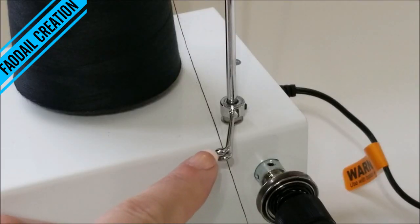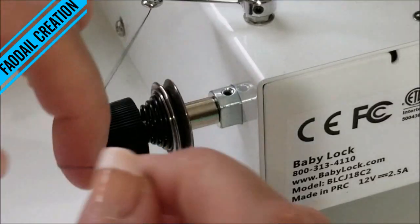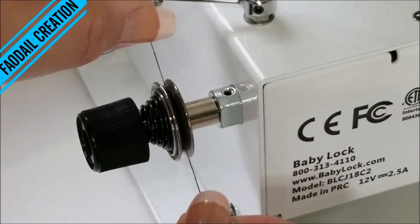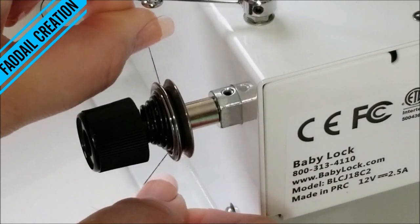Place your thread through this section here, then grab your thread and floss in between these two tension discs here.